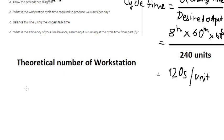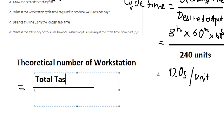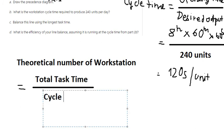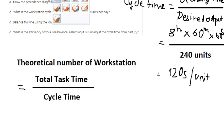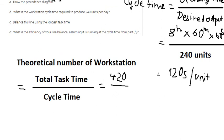So the formula in here is total task time divided by cycle time. So we have 420 divided by 120.